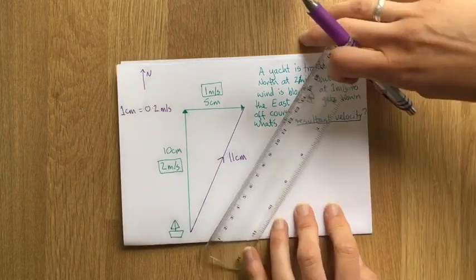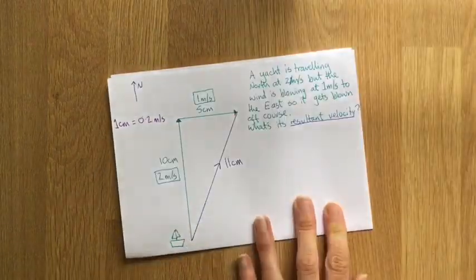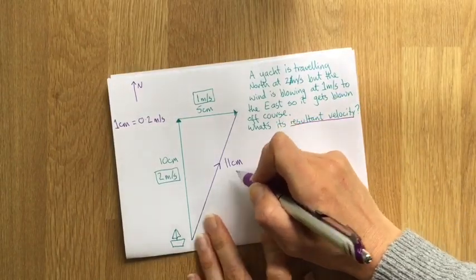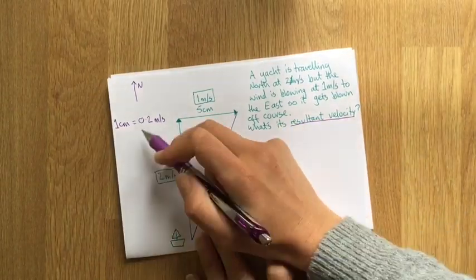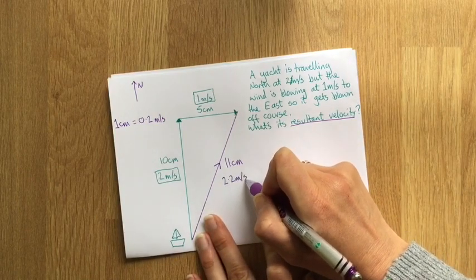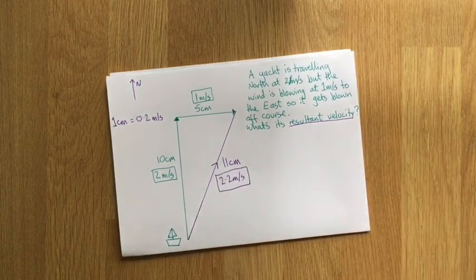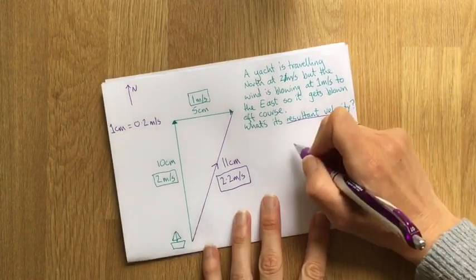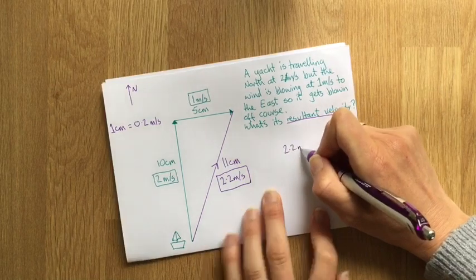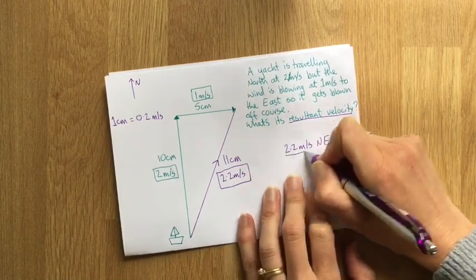So we've measured the length of this side. This side is 11 centimeters. 11 centimeters with this scale is going to be 2.2 meters per second. So the resultant velocity is 2.2 meters per second northeast.